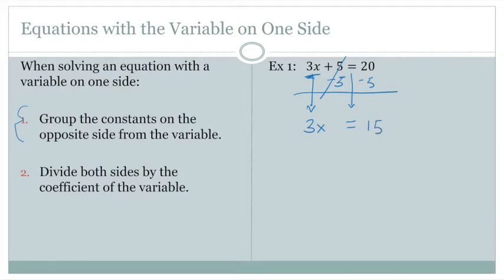Now we're ready for the next step, which is to divide both sides by the coefficient of the variable. The coefficient is 3, so we'll divide both sides of the equation by 3. We see that the 3s on the left cancel, that leaves us with x equals 5, and that is the solution to this first example.